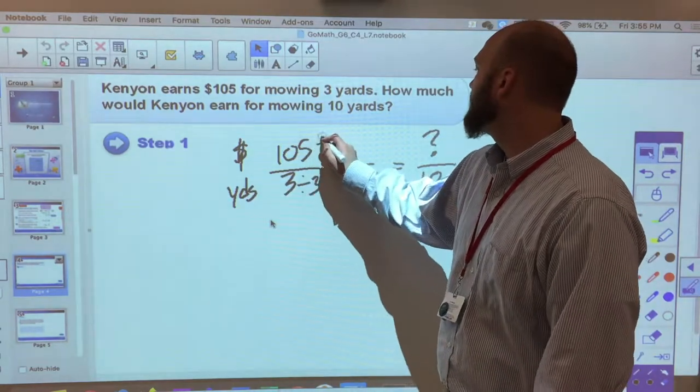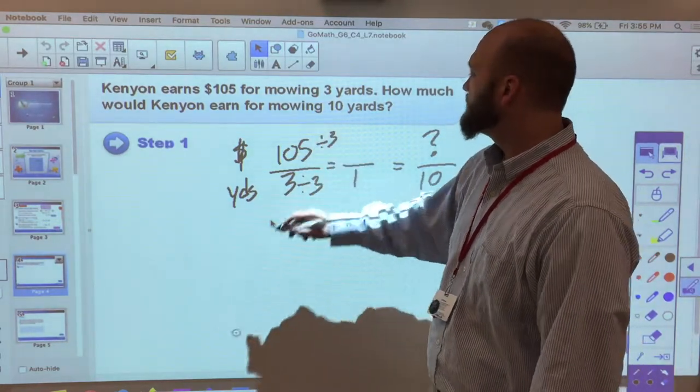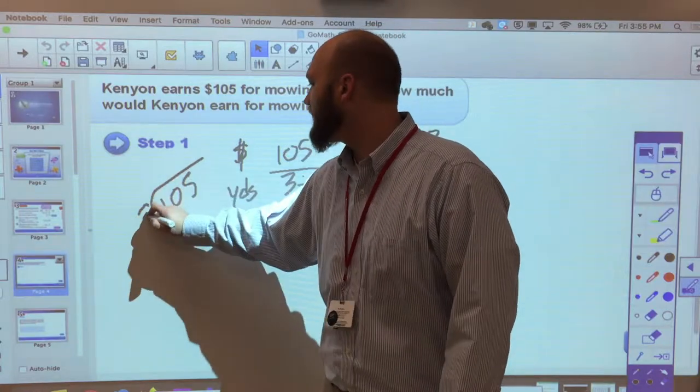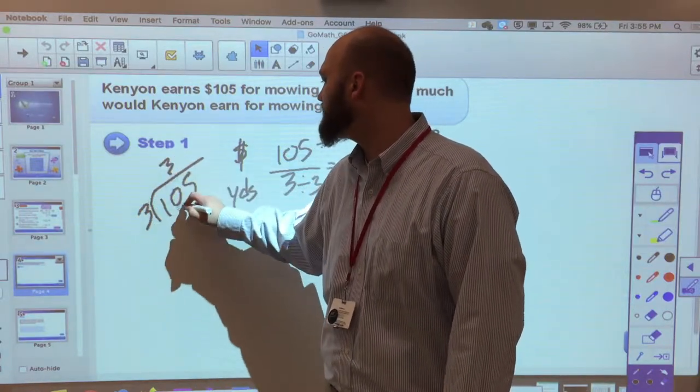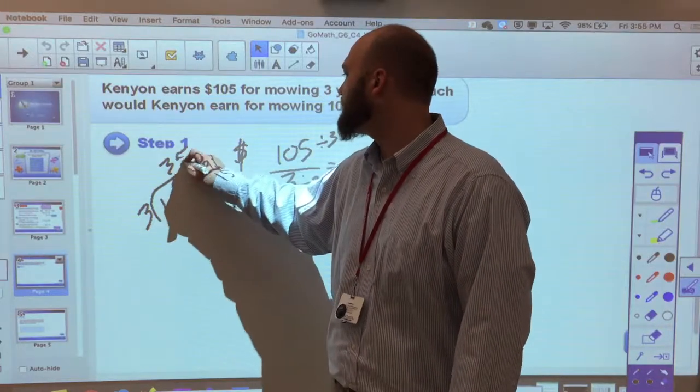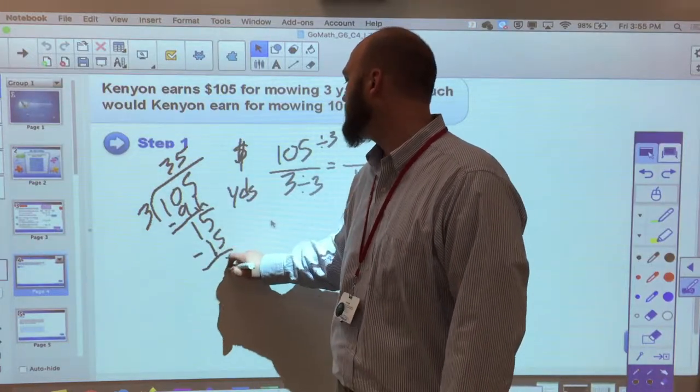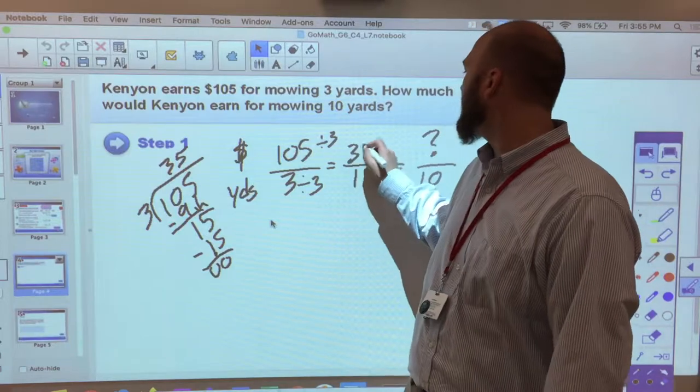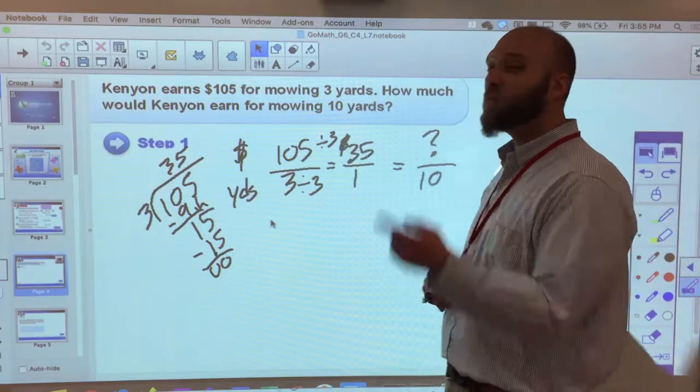105 divided by three, well if I come over here 105 divided by three, three goes into ten three times, that makes nine. Bring down your five, three goes into fifteen five times, that's fifteen. And he makes thirty five dollars for one yard.